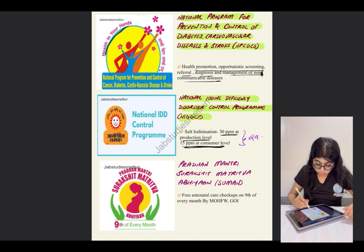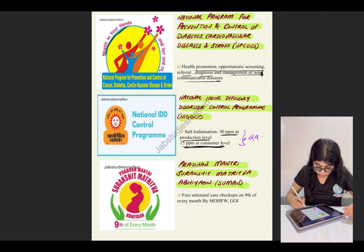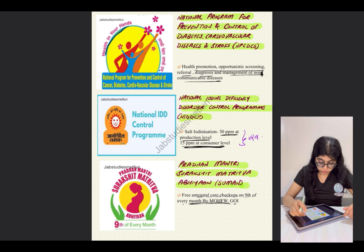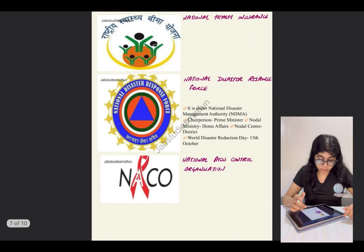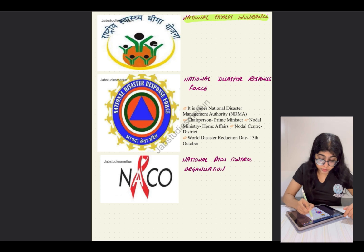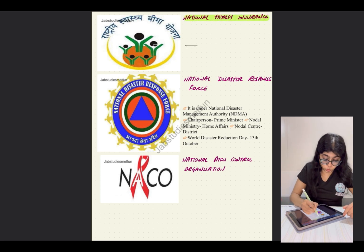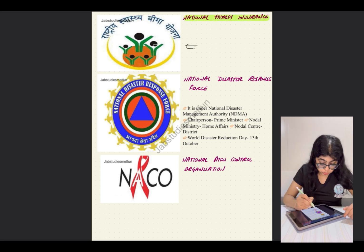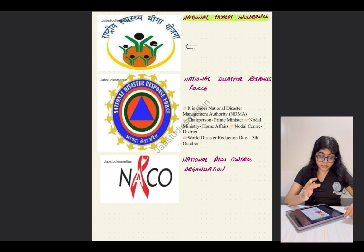Pradhan Mantri Surakshit Matritva Abhiyan, also known as SUMAN, provides free antenatal care checkups on the 9th of every month for pregnant women. For the National Health Insurance program, the logo is frequently asked and shows individuals of a family. Rashtriya Swasthya Bima Yojana is another name for the National Health Insurance program.